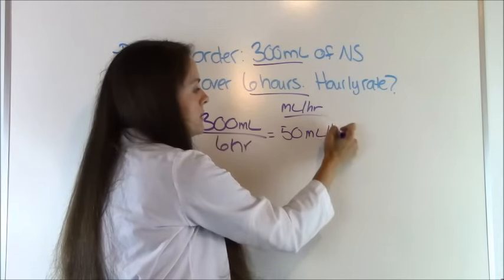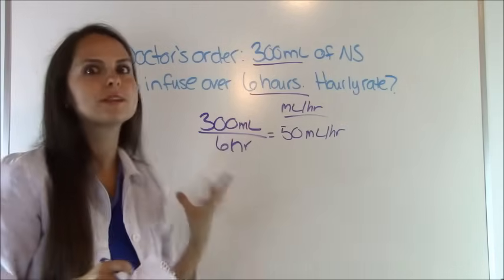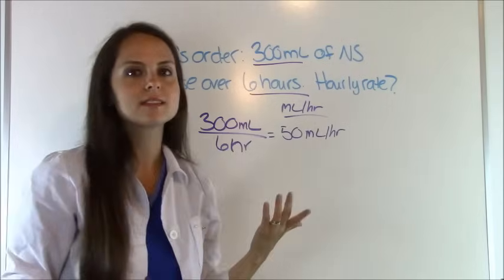So 300 divided by 6 equals 50. So it's going to be 50 milliliters per hour and once that hits 6 hours, it'll be 300 milliliters. So that was a really simple problem. And using dimensional analysis, it just makes sense.